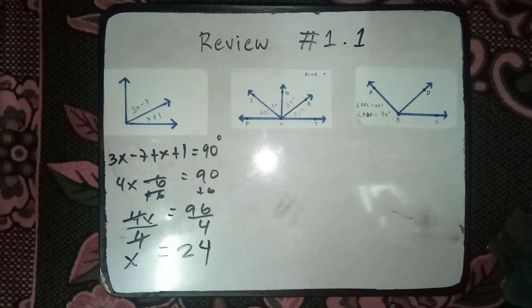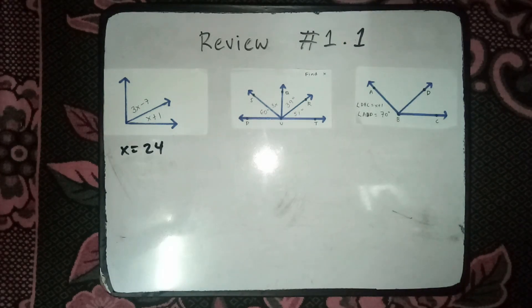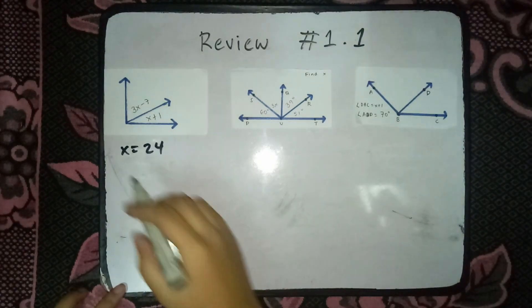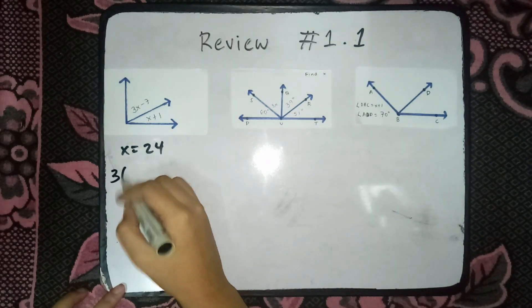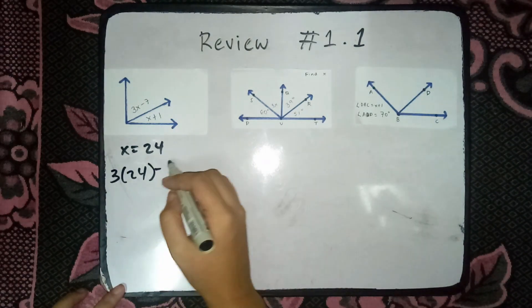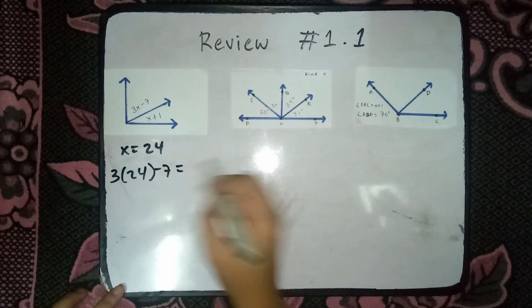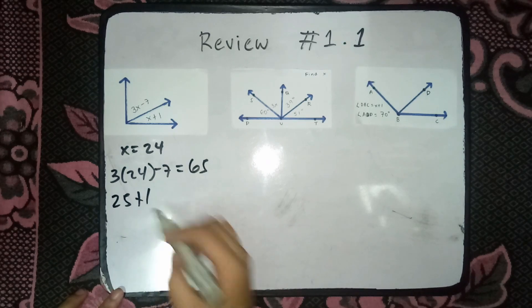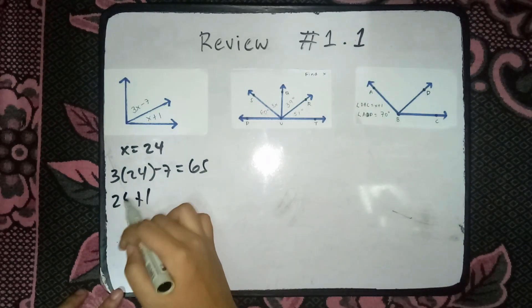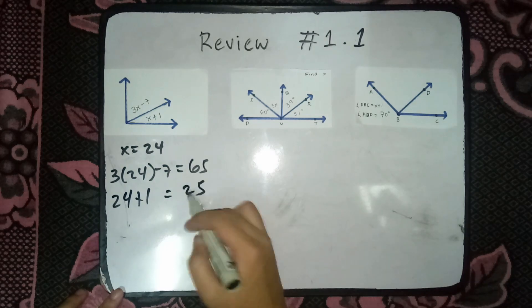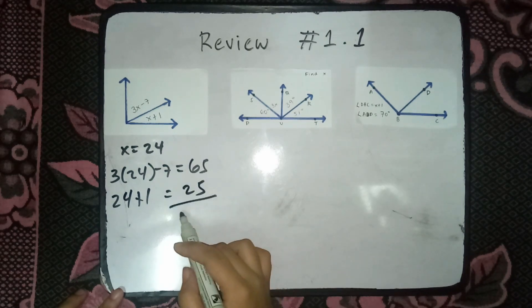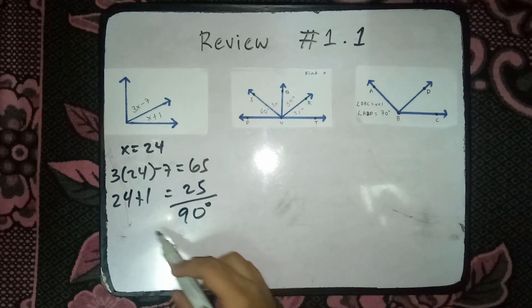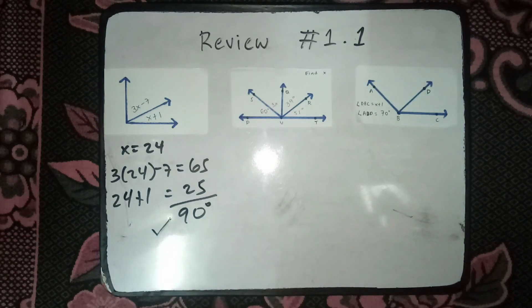24. So, x is equals to 24. Check natin yan. 3 times 24 minus 7 is equals to 65. 24 plus 1 is equals to 25. 65 plus 25 is equals to 90 degree. So, check.